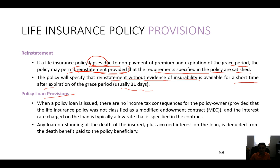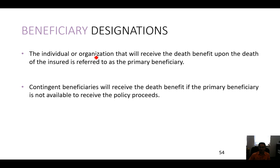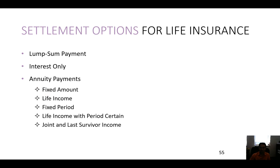Policy loan provisions: when a policy loan is issued, there are no income tax consequences. The interest charged on the loan — typically a low rate — is specified in the contract. Any outstanding loan balance plus accrued interest is deducted from the death benefit paid to the beneficiary. The individual or organization that receives the death benefit is the primary beneficiary; the contingent beneficiary receives proceeds if the primary is not available. For example, my wife is the primary and my two kids are the contingent beneficiaries. You can receive a lump sum or multiple other types of payments.